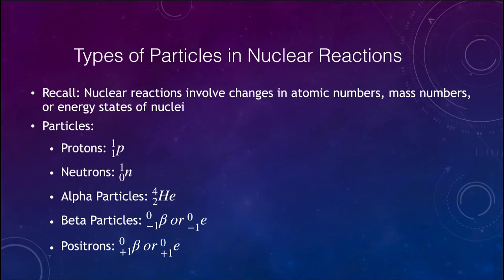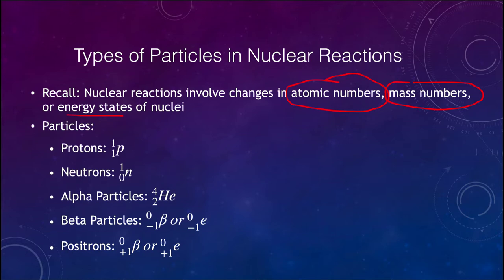First of all, we want to look at the types of particles that are involved. Nuclear reactions involve changes in atomic numbers and mass numbers, or the energy states of the nuclei. So they are all changes within the nucleus of the atom. We're not generally talking about electrons here, which is what we looked at for chemical reactions.